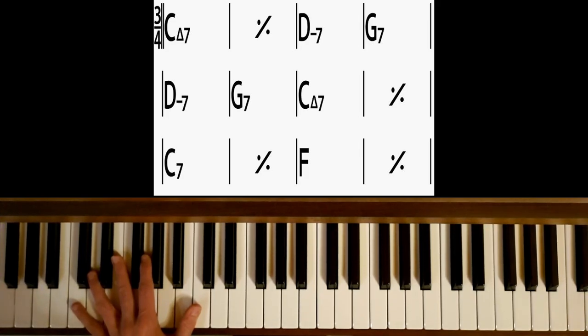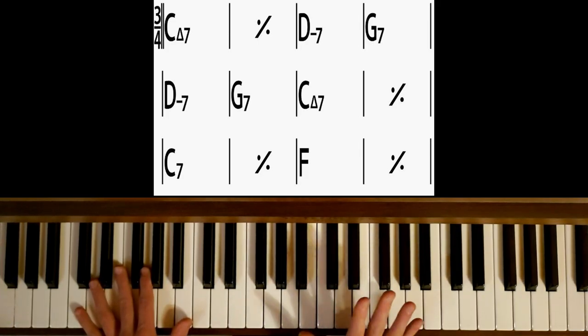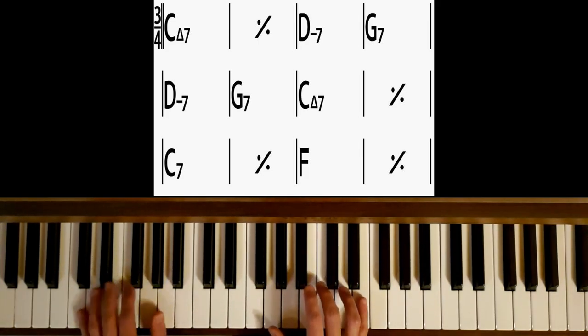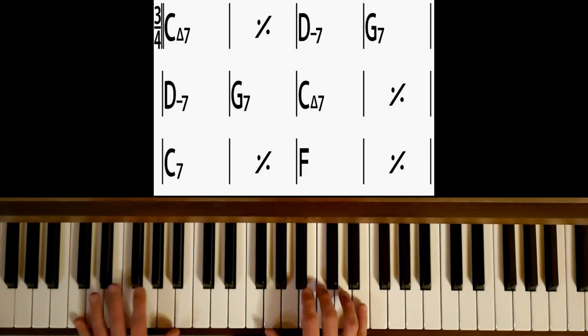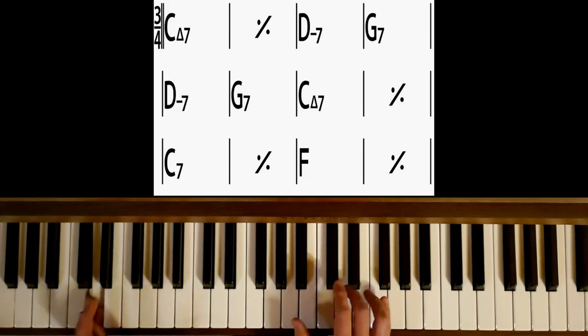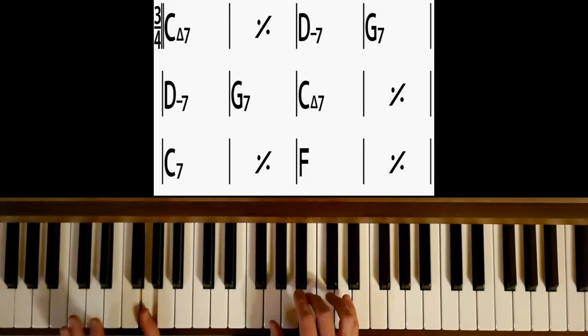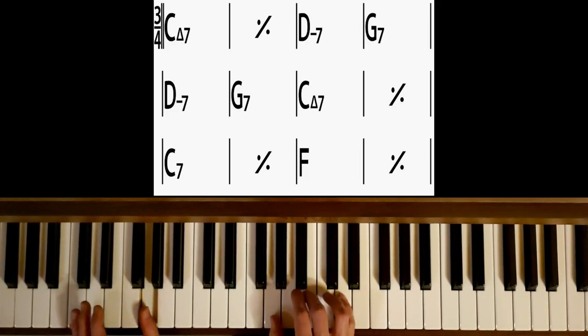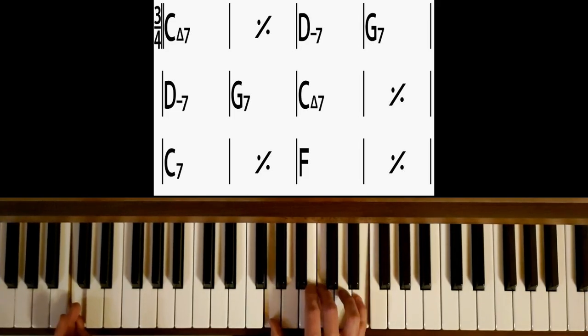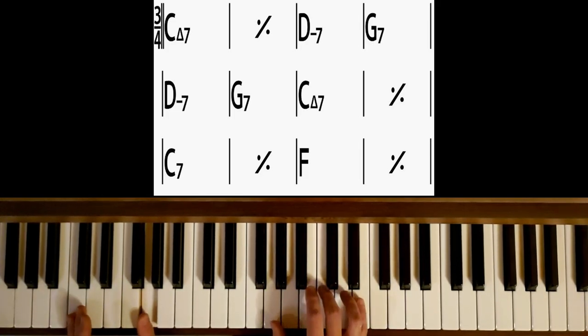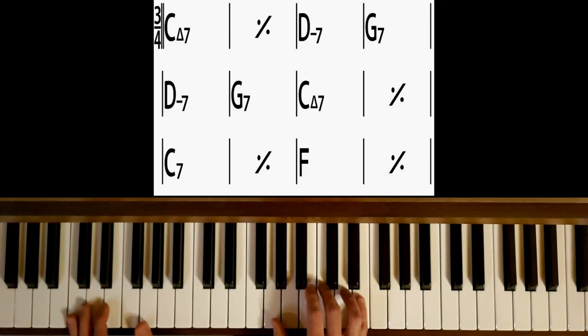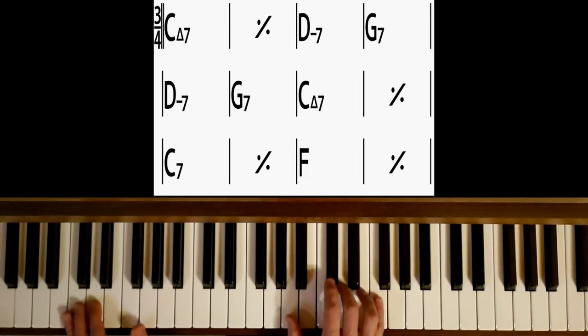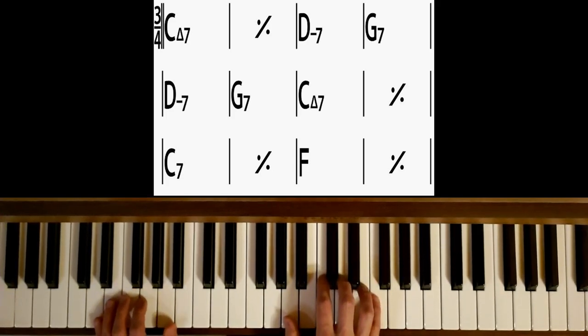Donc La Javanaise, c'est une valse. Trois temps. On va commencer Do. Je vais faire juste les accords basiques avec une petite basse simple. Ré mineur, Sol, Do. Ré mineur, Sol, Do. Donc Ré mineur, Sol, Do. Vous aurez certainement remarqué que c'est 1, 2, 5, 1.